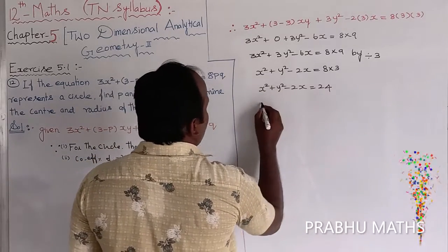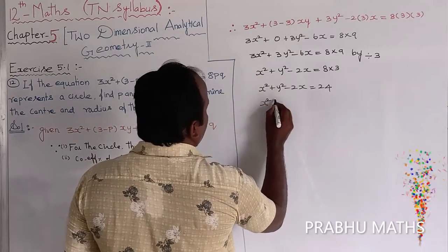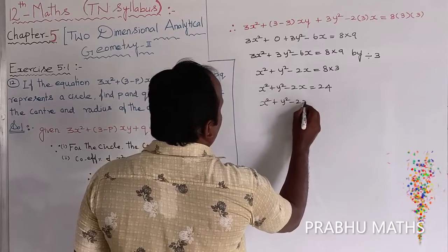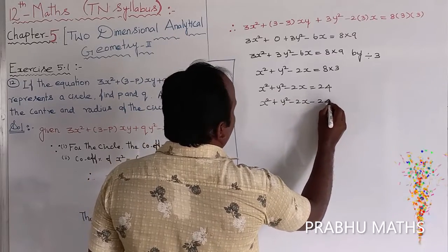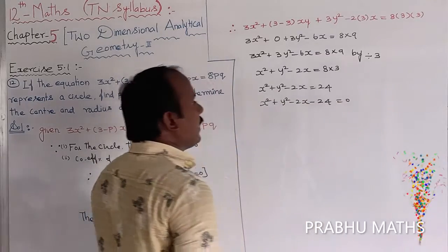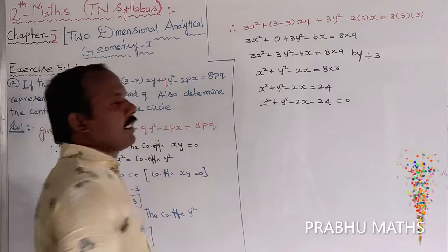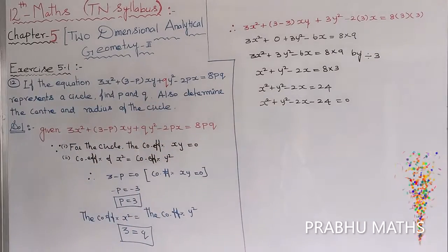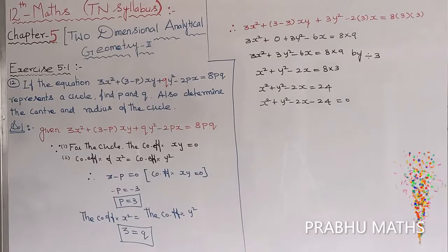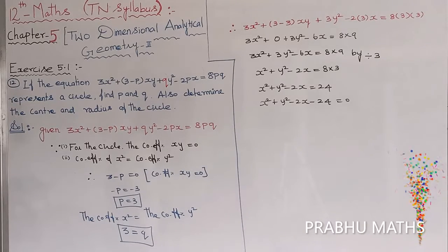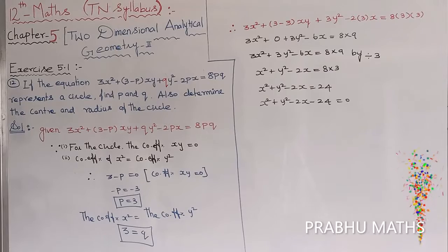Moving 24 to the left side, we get x squared plus y squared minus 2x minus 24 equals 0. This is the standard general form of the circle equation.